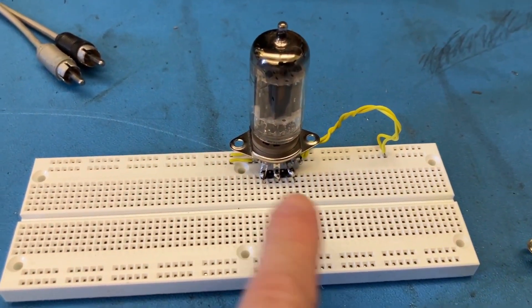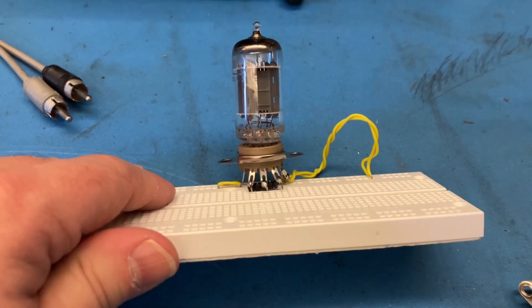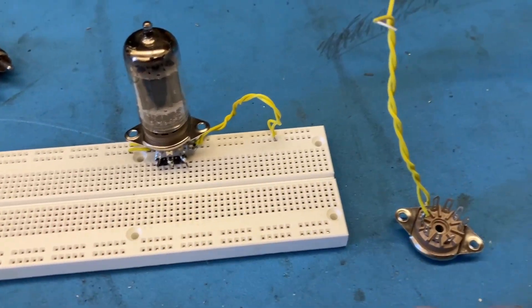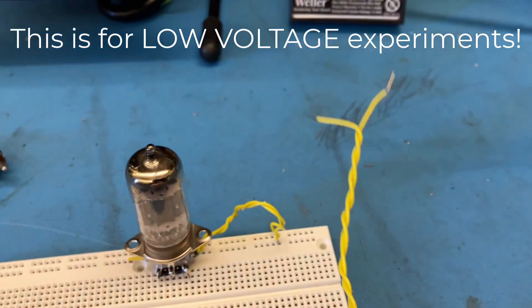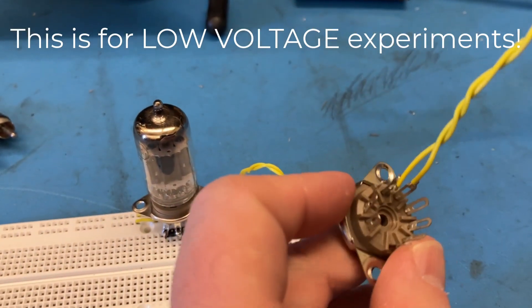Some viewers asked me how I mounted the tube here onto the breadboard. So for the heater pins 4 and 5, I just attached these wires, no biggie there.